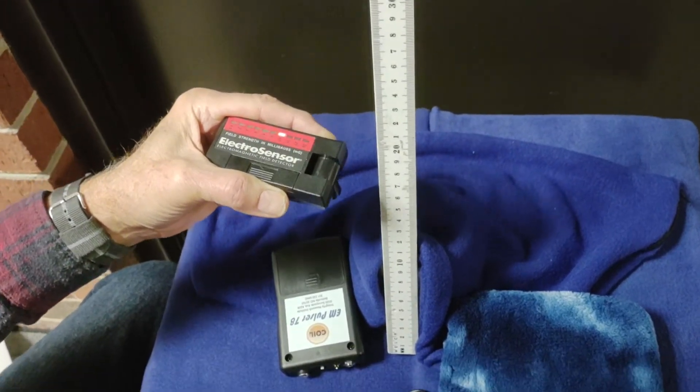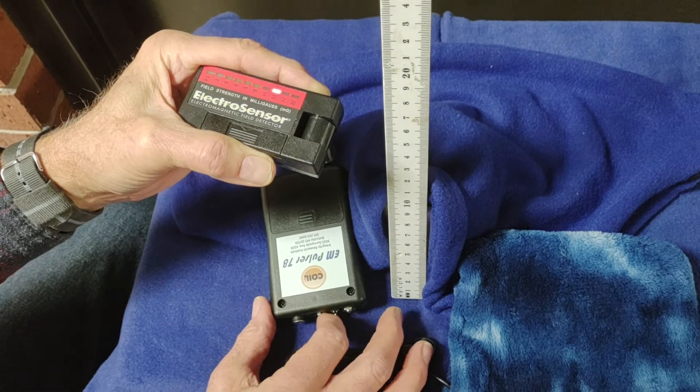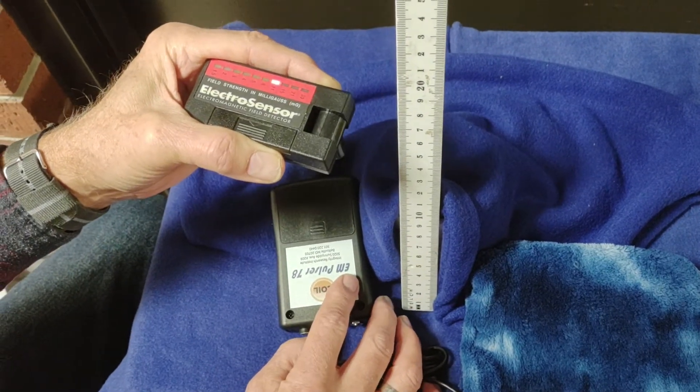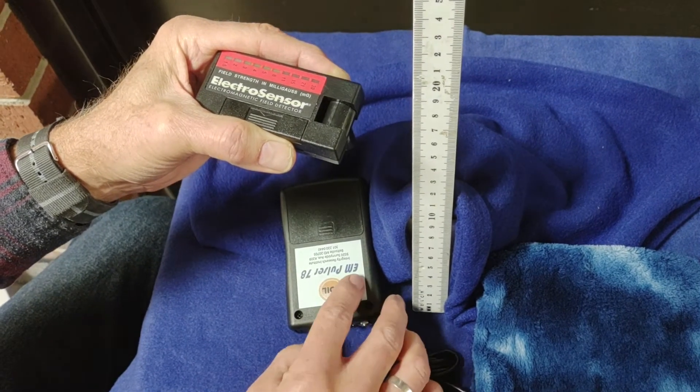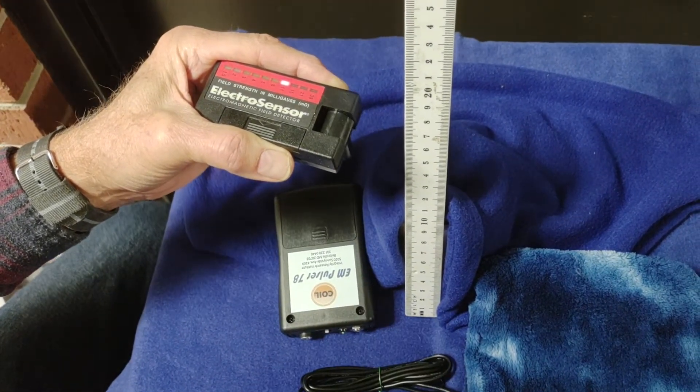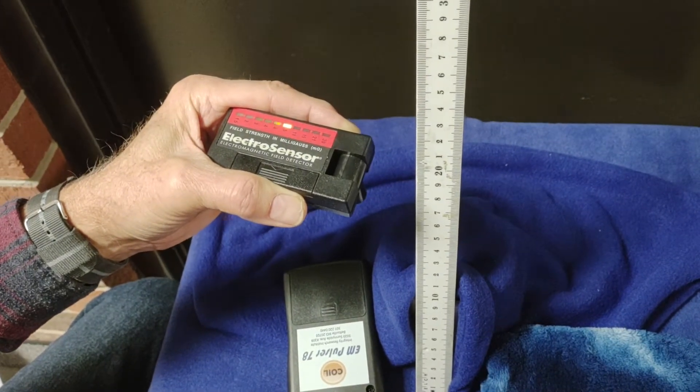And the other important thing is that this is only the magnetic field from the AM Pulser itself. If I turn it off briefly, you can see it goes to zero. And if I turn it back on, the magnetic field is back to where it was at 10 milligauss.